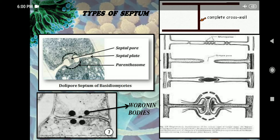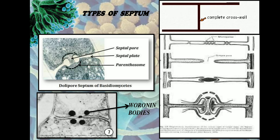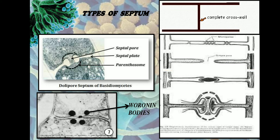Sometimes there is a pore present in the septa — a septal pore. Such a type of septa is called simple septa. In simple septa, a small pore is present in the center of the septum.